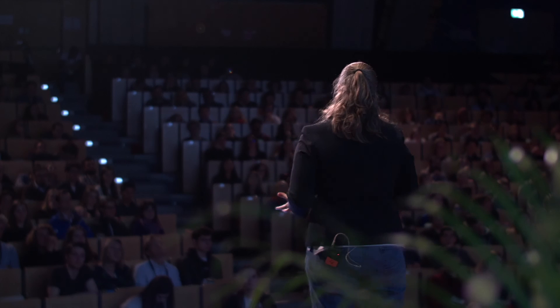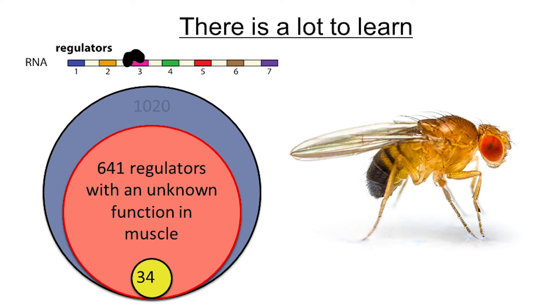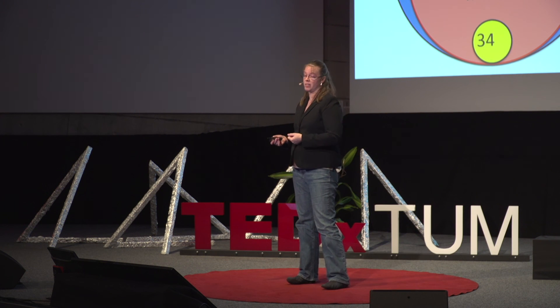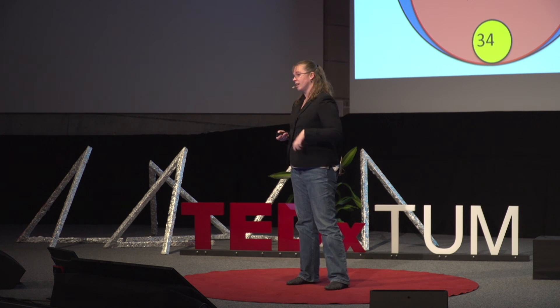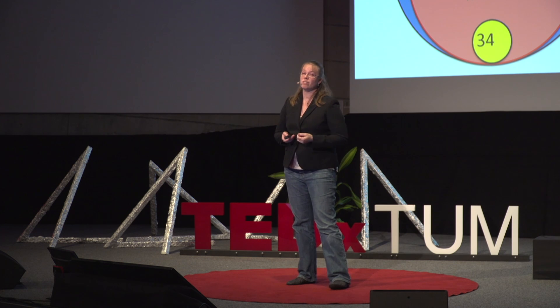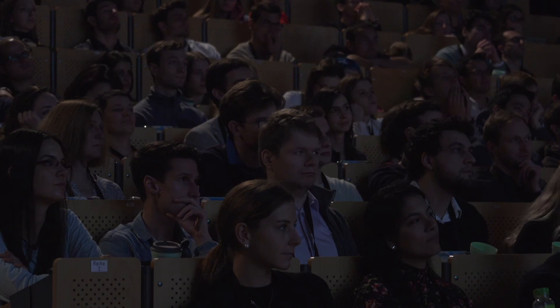Flies are really a great model for us to understand what these genes do and how they work — experiments that you really can't do on humans. We still have more than 600 different regulators to characterize to figure out what they do in muscle and how they work. Fruit flies provide a great way for us to understand what alternative splicing does that controls muscle development, and how when you misregulate it, you get muscle disease. This is why I spend my days studying fruit flies, and I hope that the next time you see a fruit fly buzzing around your kitchen, you don't look at it quite the same way again. Thank you.